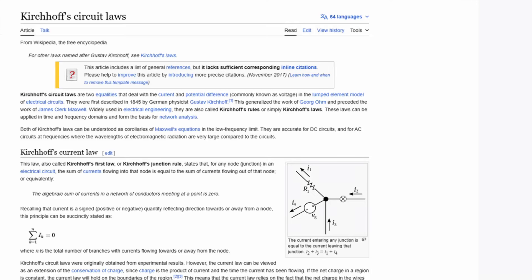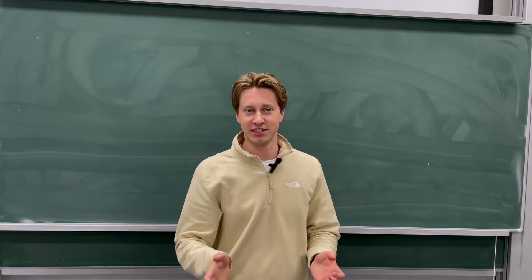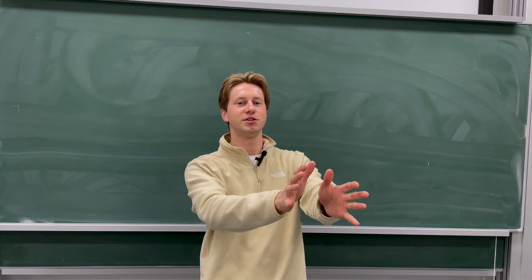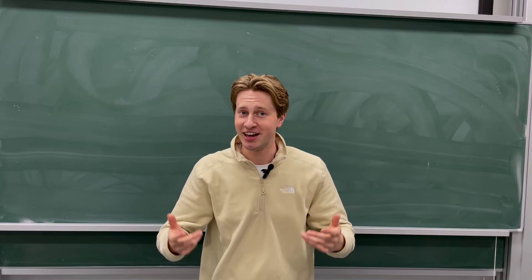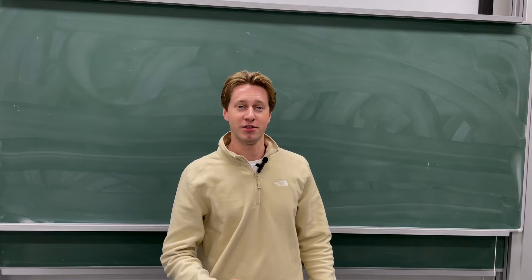Kirchhoff's law states that the total electrical current flowing into any junction in the circuit must be equal to the total current leaving — that is, the current through the junction must be conserved. The law follows from the conservation of charge, which says the total charge inside any closed system must remain constant. In an electrical circuit, charge is carried by electrons, and so the conservation of charge is equivalent to the statement that the number of electrons entering a junction must equal the number leaving.